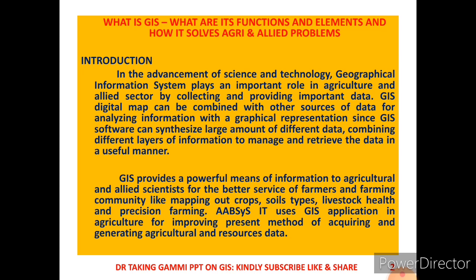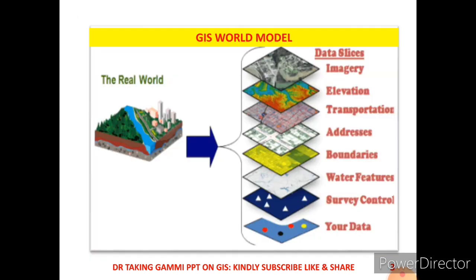This provides a powerful means of information to agricultural and allied scientists for better service of farmer and farming communities, like mapping out crops, soil types, livestock health, and precision farming. Information technology uses these applications in agriculture for improving methods of acquiring and generating agricultural resource data. Let us see some images of the GIS world model.